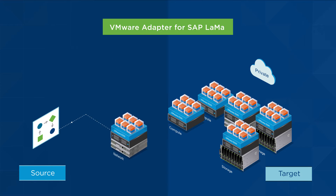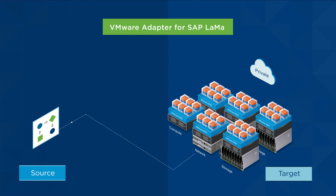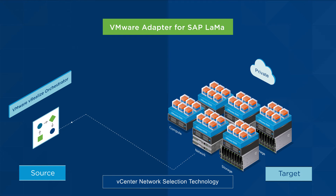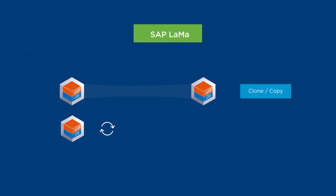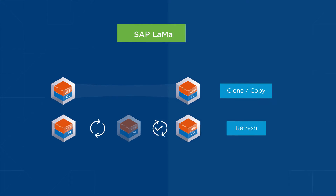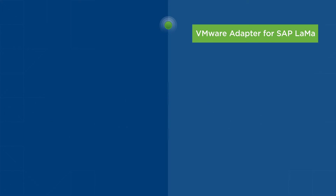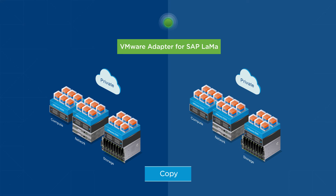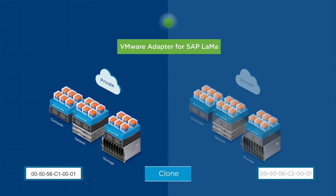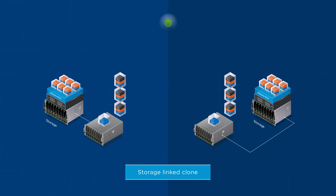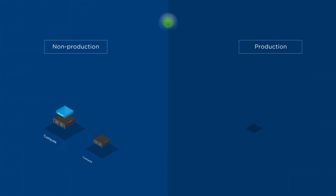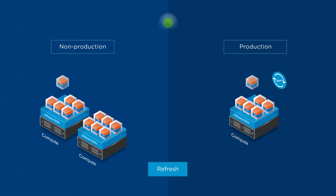You can even migrate an SAP system from a source network to a target network using VMware vRealize Orchestrator workflows and vCenter network selection technology. The VMware Adapter takes the copy, clone, and refresh features of SAP LAMA to the next level. Create a system copy of a virtual SAP system while the system is live and online — this can be a traditional independent full clone or VMware's unique storage-efficient linked clone, all while the virtual SAP system is live and online. You can also refresh the data of one of the non-production SAP systems from the production system while the system is live and online.